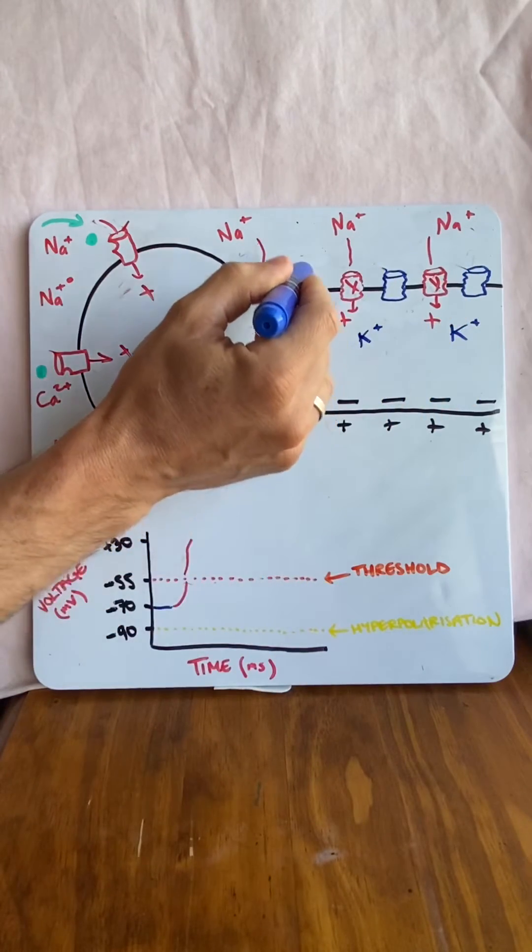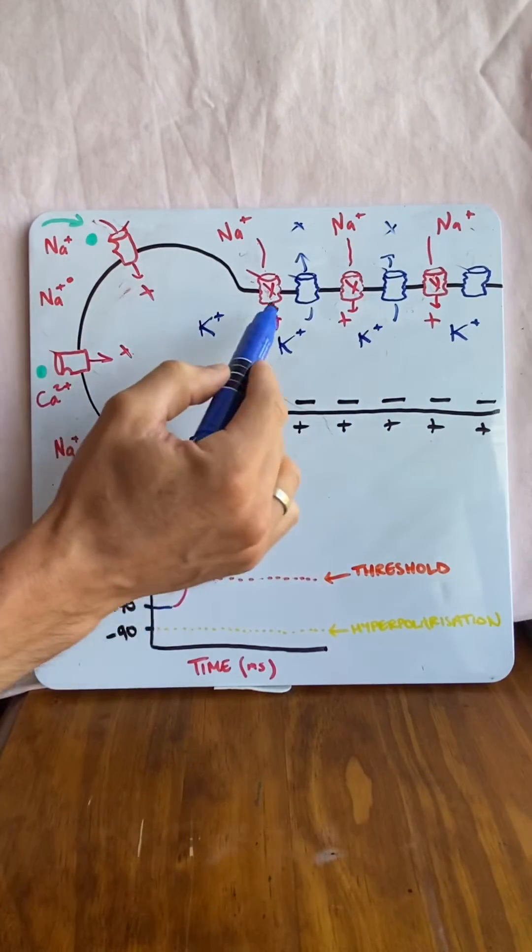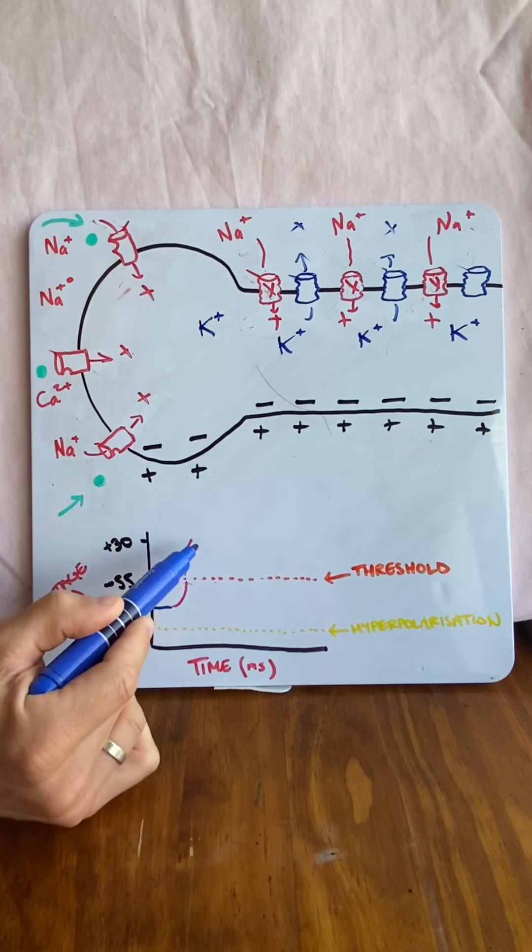and positive potassium will start to move out of the cell, carrying its positive charge with it, which means it becomes negative again inside and it starts to drop down.